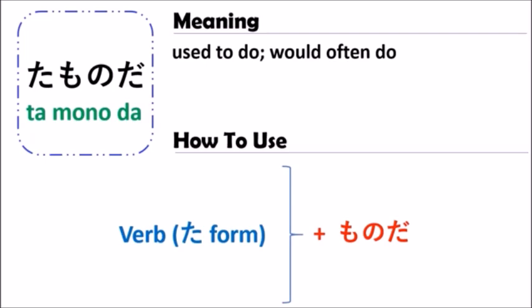For example, past tense forms like いました or きた. Every time you use the grammar of たものだ, you should change the verb to the past tense and follow it with ものだ. It has the meaning of 'used to do' or 'would often do.'